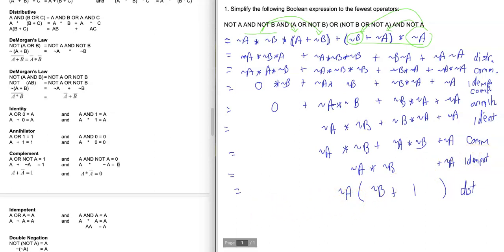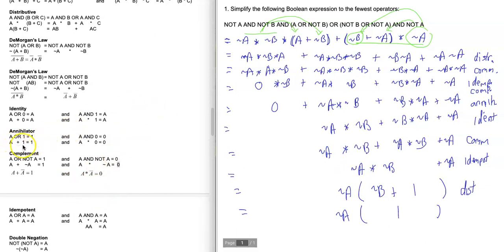So what does factoring out ~A get us? Inside the parentheses we have ~B + 1, which equals 1 by the annihilator rule — anything plus true is always true. So you're left with ~A * 1, which is just ~A. The annihilator rule was used in that last step.